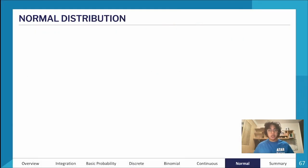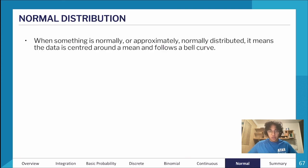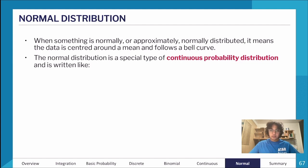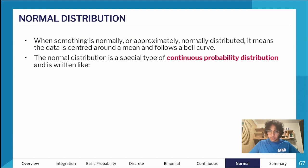We're going to finish off today by talking about the normal distribution. What does it mean for something to be normally distributed? It means that the data has a fixed mean and follows a bell curve shape. It's a special type of continuous probability — the most common type you will see, and you've probably seen it in day-to-day life.